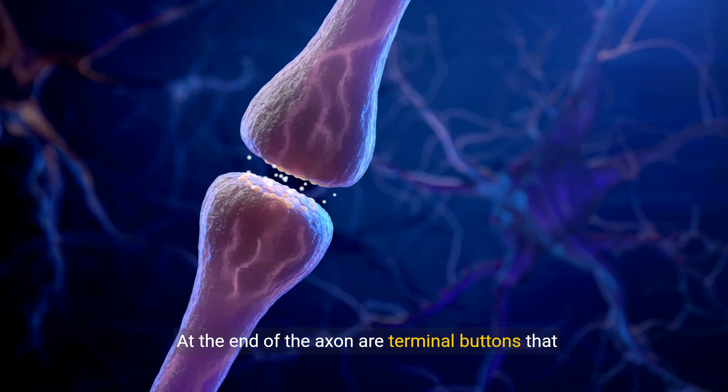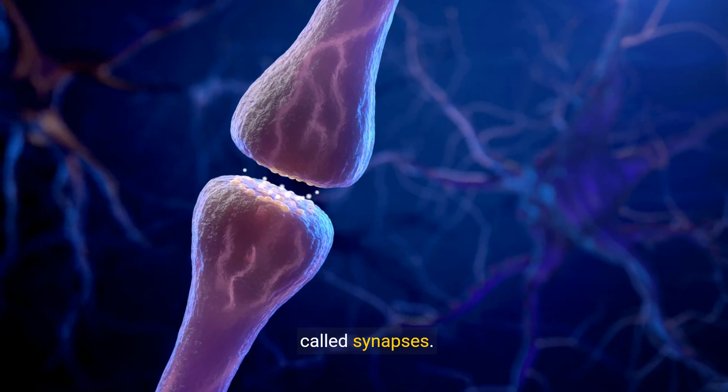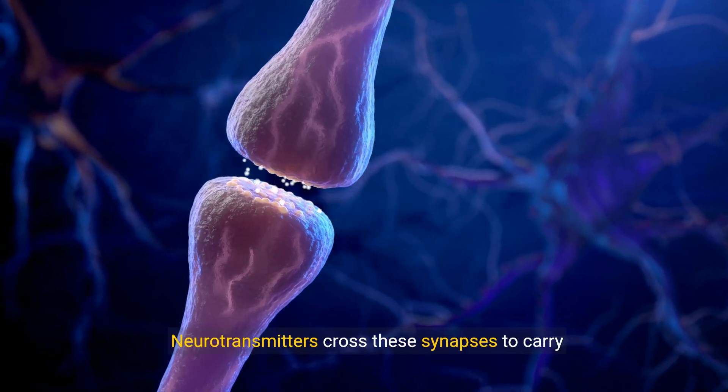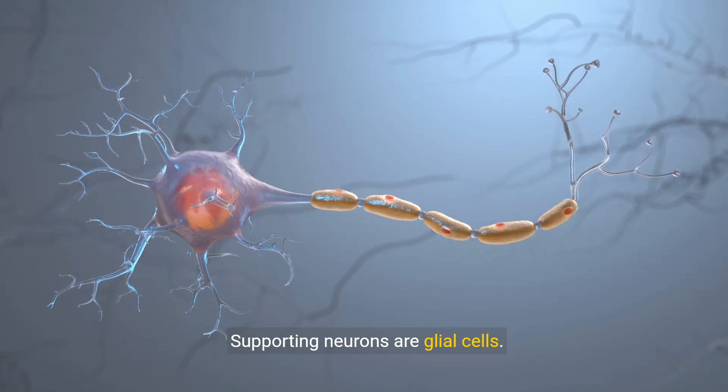At the end of the axon are terminal buttons that form junctions with other cells in structures called synapses. Neurotransmitters cross these synapses to carry signals to other neurons. Supporting neurons are glial cells.